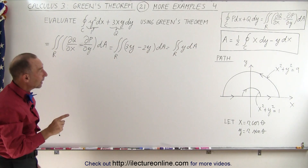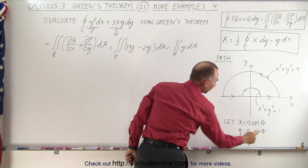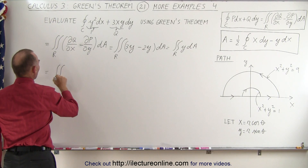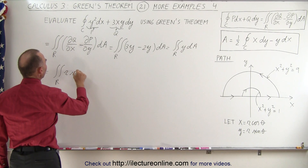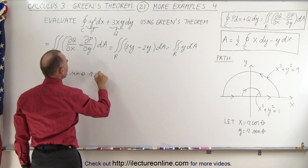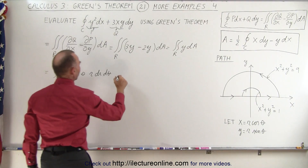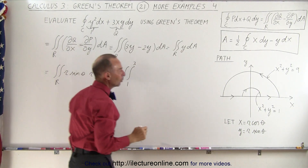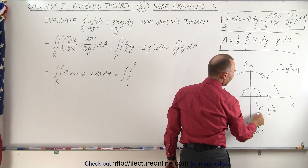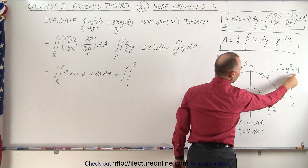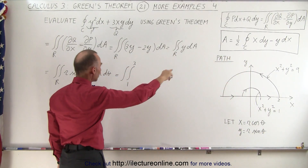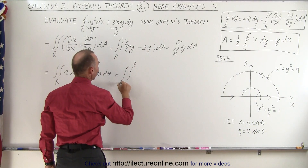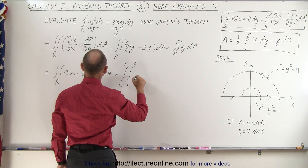Now we're going to replace y and dA by the equivalent in terms of theta. Notice that dA can be written as r dr d theta. So this becomes equal to the double integral over the region where y is now going to become r times the sine of theta, and dA is going to be r dr d theta. For r we're going to integrate from 1 to 3 — since x squared plus y squared equals 1 gives r=1 and x squared plus y squared equals 9 gives r=3. We'll integrate around the half circle from 0 to pi, and this becomes sine of theta d theta and r squared dr.